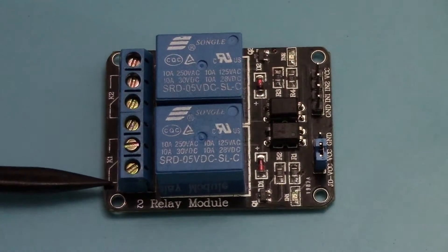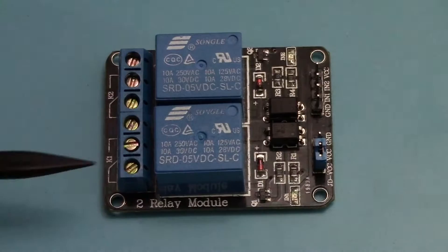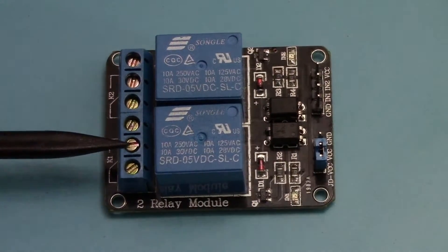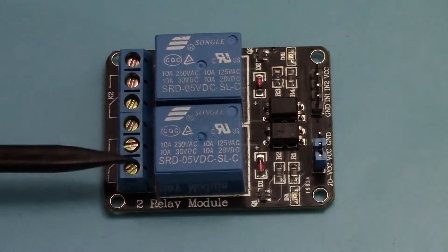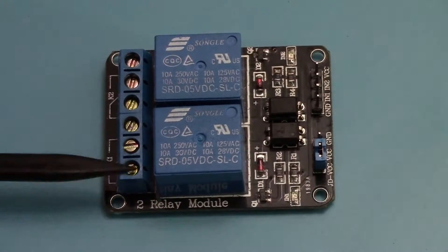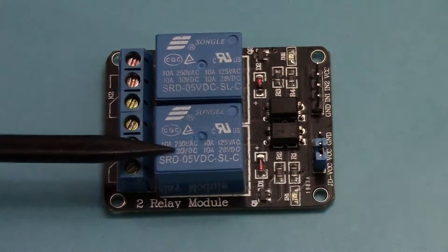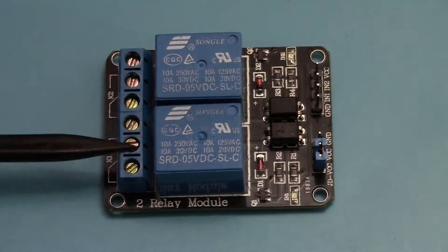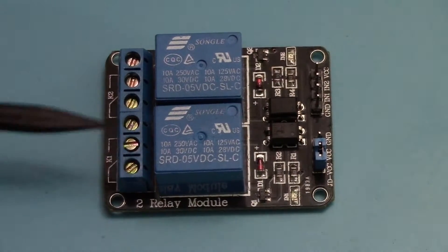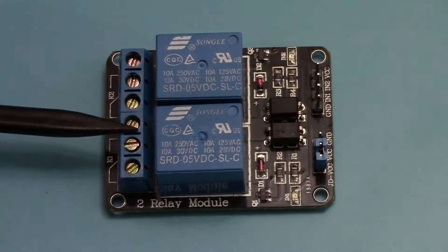You're going to see one of them is normally closed, a common and normally open. Now what that means is if we were to measure the resistance between normally closed and common when this relay is not activated then there is a connection between these two pins. When we activate this relay that's going to flip. That will no longer have a connection here and it will move to the normally open position.